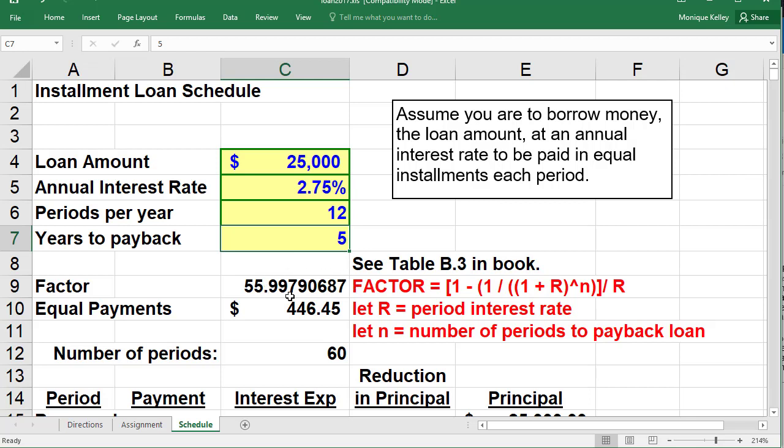And what the spreadsheet will do is automatically figure out the factor. As an alternative, if you use Table B.3, which is in the back of your textbook, you will find that you will also get the same factor available if you look at 60 rows at 2.75% interest. But I don't believe the table has that interest rate, but you can also get the same information for certain percentages using Table B.3.